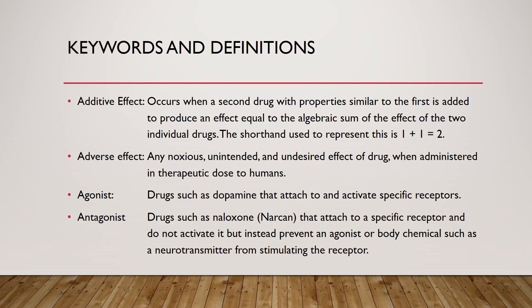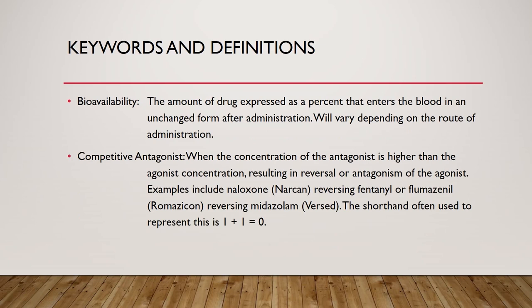Bioavailability: the amount of drug, expressed as a percent, that enters the blood in an unchanged form after administration. Will vary depending on the route of administration. Competitive antagonist: when the concentration of the antagonist is higher than the agonist concentration, resulting in reversal or antagonism of the agonist. Examples include naloxone (Narcan) reversing fentanyl, or flumazenil (Romazicon) reversing midazolam (Versed). The shorthand used to represent this is 1 plus 1 equals 0.